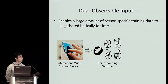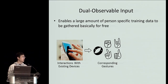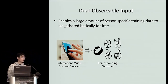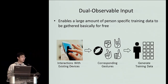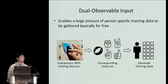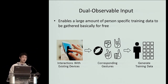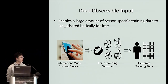Specifically, many of the hand and finger gestures that we're trying to recognize using EMG are being performed and detected on a smartphone all the time. This means that if we wear an EMG device while we're using our smartphone, the smartphone can label the EMG signals incoming to the EMG device with the correct gesture labels to generate lots of training data. Essentially, the dual-observable input approach is about leveraging people's natural interactions with the existing input devices around us, because all these devices can already recognize what gestures we're performing, and we can use that recognition to train wearable input devices.